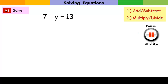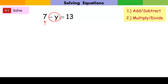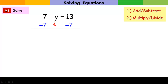Here the variable term has a negative sign, which means it's negative 1y. Our constant is positive 7, so we subtract 7 from both sides. What comes along is negative y, and 13 minus 7 is 6. Now we need just 1y, but we have negative 1y, so we divide both sides by negative 1. That gives us y equals negative 6.